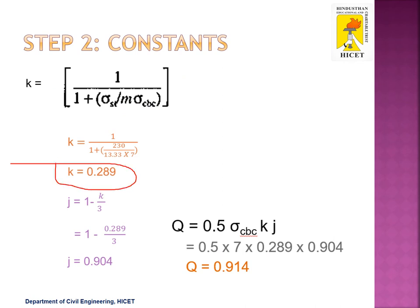Next, the lever arm factor J. The formula for J is 1 minus K divided by 3. We already calculated K as 0.289. Substituting the value of K, the lever arm factor J is 0.904. Then we find the design coefficient Q, which equals 0.5 into sigma CBC into K into J. Substituting sigma CBC, K, and J, we get Q equal to 0.914.